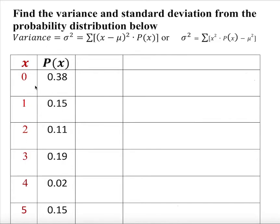Find the variance and standard deviation from the probability distribution below. So this is the probability distribution. X is the distribution of variable and this is the corresponding probability.